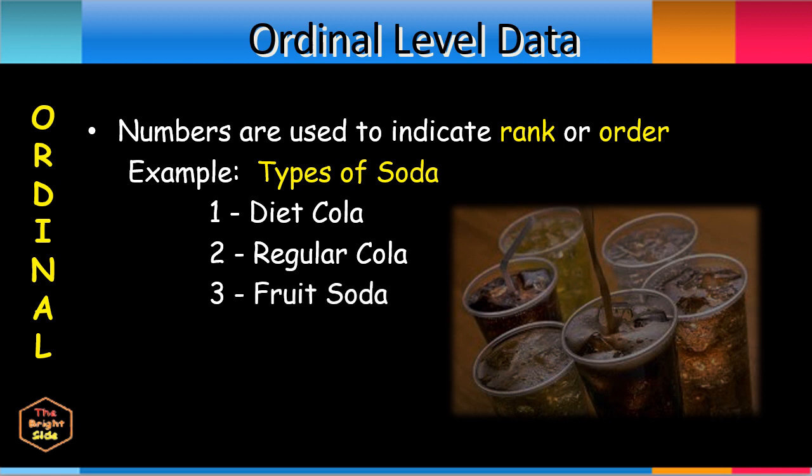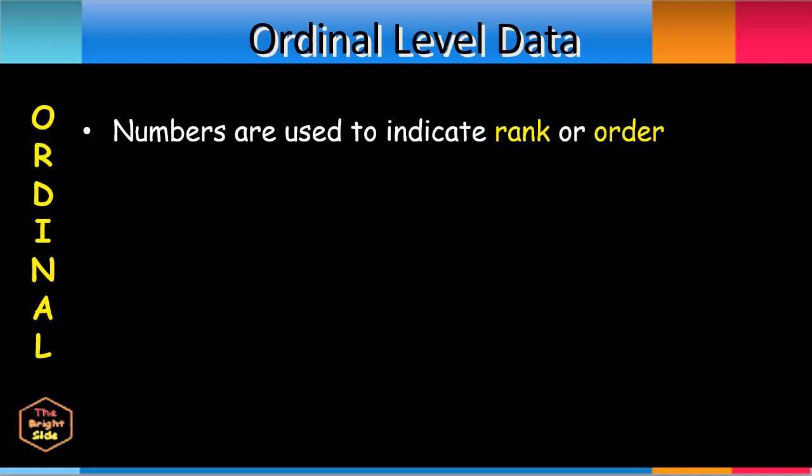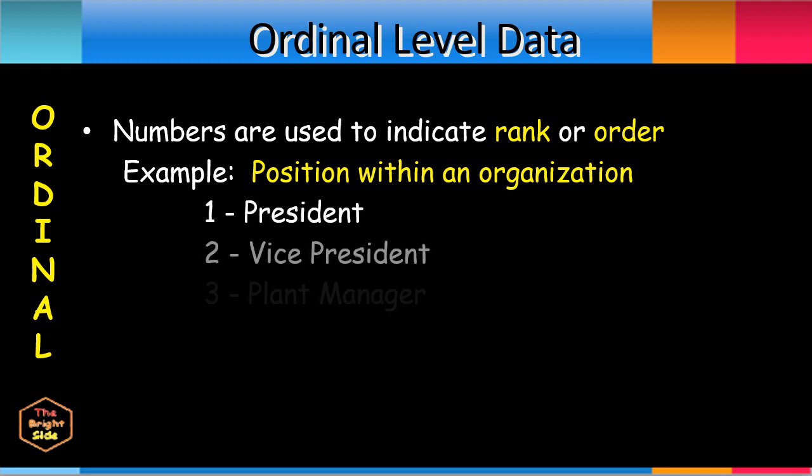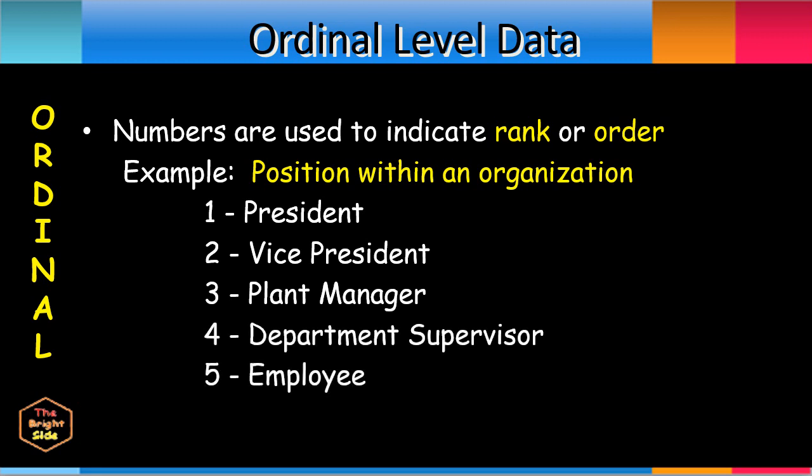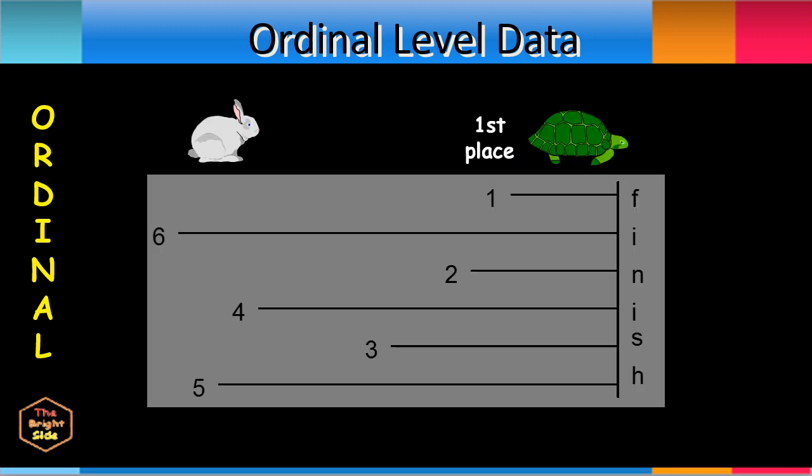The numbers 1, 2, and 3 show the rank of the type of soda based on consumer preference. Another example is the data for position within an organization. The numbers 1, 2, 3, and 5 may be assigned to the different positions. These numbers show the rank of every position within the organization. This next example is an illustration that shows the order of finish of the contestants in a race. Their relative positions such as first place, second place, third place, and so on, provide ordinal level data.